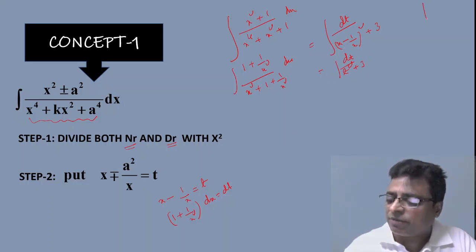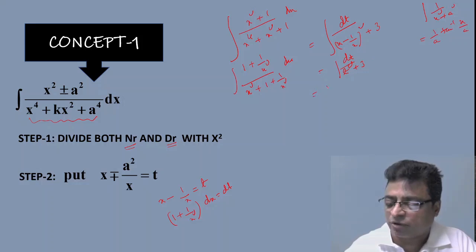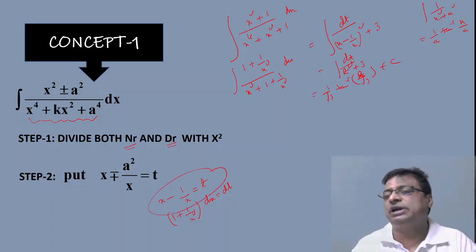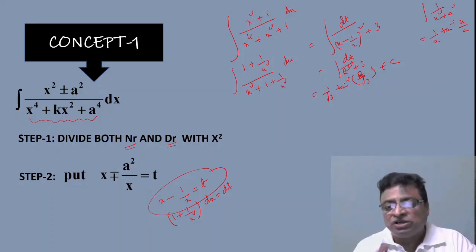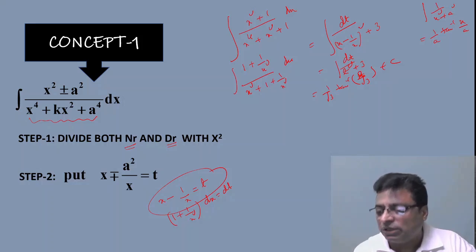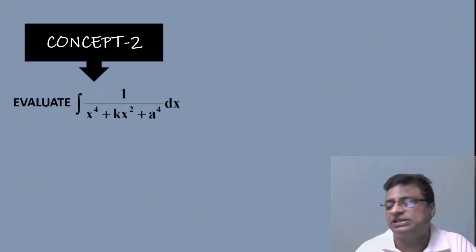This is in the form of 1/(x² + a²), whose integral is (1/a) tan⁻¹(x/a). Applying this formula gives (1/√3) tan⁻¹(t/√3). Substituting back t = x − 1/x, you can get the final answer. Problems based on this model are very useful, and this leads us to Concept Number 2.